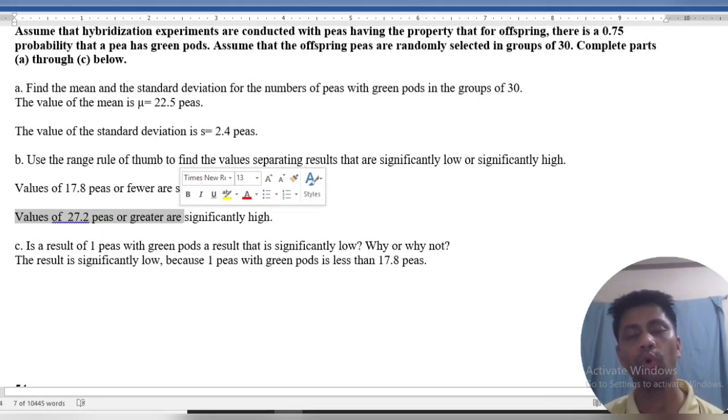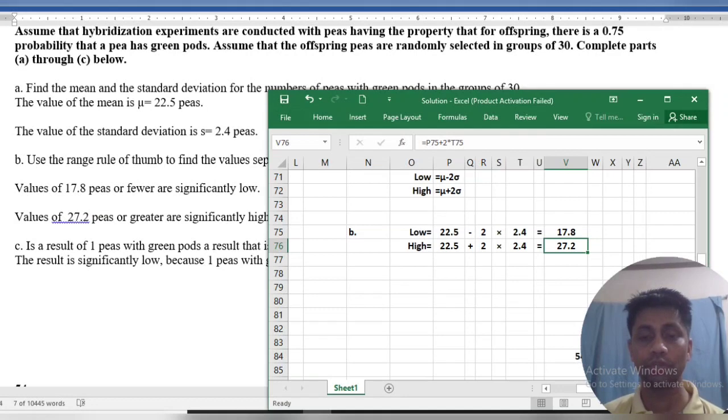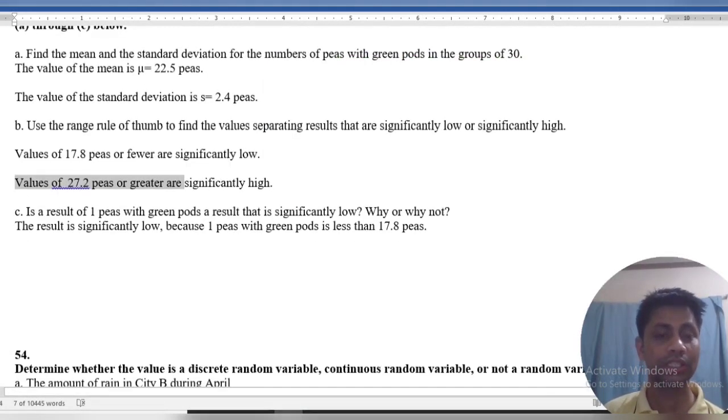The rule of thumb is low or high. Low is 17.8 and high is 27.3. Significantly high values are above 27.3.